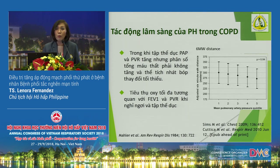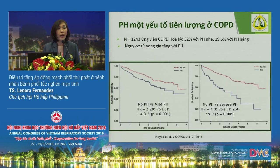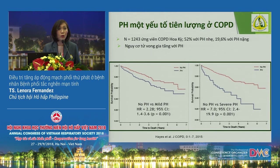They will have more exacerbations, do worse on exercise, and have a higher mortality rate. If they have severe pulmonary hypertension, their survival rate is 36% compared to 62% survival rate for mild pulmonary hypertension in COPD.